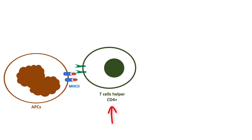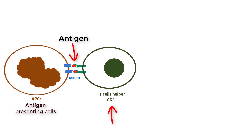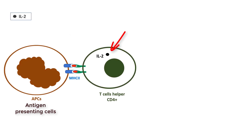Once T-helper CD4 cells come in contact with foreign antigens attached to MHC2 molecules, they become activated. This activation results in the production and release of interleukin-2 cytokines. The released interleukin-2 cytokines come back in autocrine fashion to activate their releasing CD4 cells, inducing a cascade of intracellular reactions.